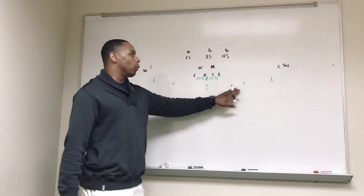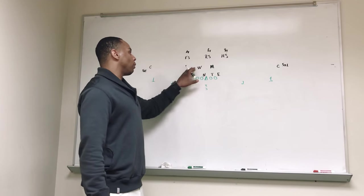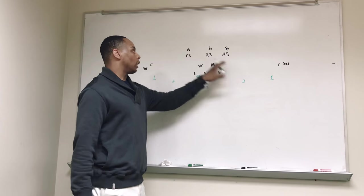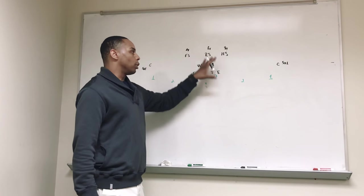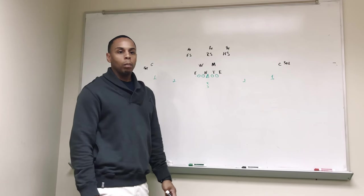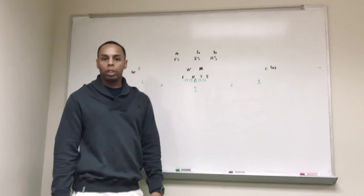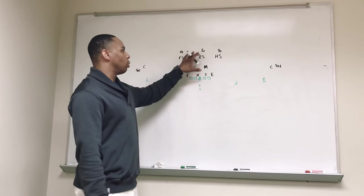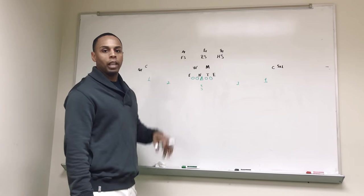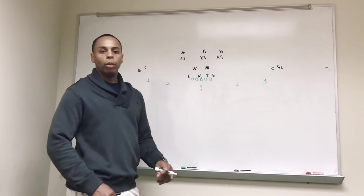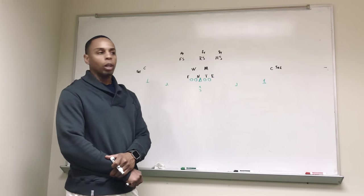Normally what we would do in an even formation is we would have to bounce one of our linebackers and walk down one of our safeties, and that puts us in what we call a 4-1 box. But maybe we are playing a team that runs the ball a little bit more. We like to keep our numbers in the box a little bit heavier and not rely so much on our safeties to be in the fit from 8 yards deep. We would call our cover 3, which we call Deuce Solo.